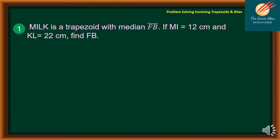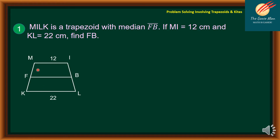Let's consider Problem Number 1. MILK is a trapezoid with median FB. If MI is equal to 12 cm and KL is equal to 22 cm, find FB. Let's illustrate the given: this is the trapezoid MILK such that MI is equal to 12 and KL is equal to 22. We want to find out the length FB.